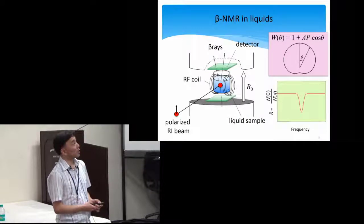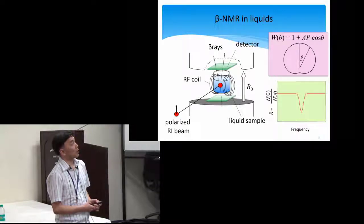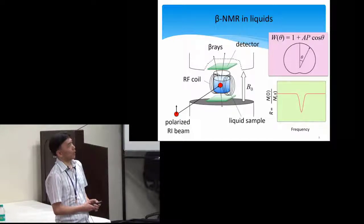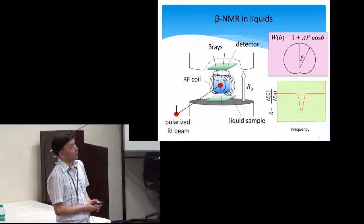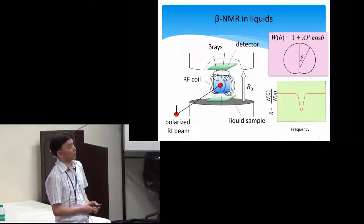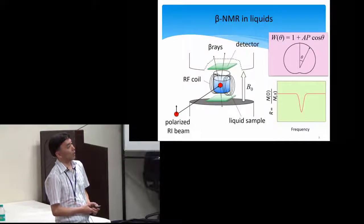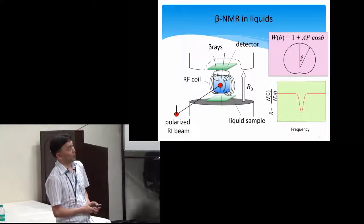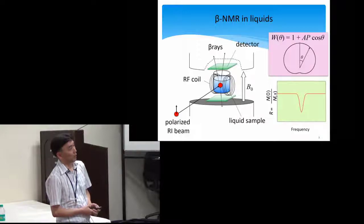The principle of beta-NMR is using the asymmetric beta-ray distribution relative to the direction of polarization. The counting rate of beta-rays up and down relative to the polarization, from the ratio of the counters, we can monitor the direction and the degree of polarization in the material. And applying the RF field and scanning the RF frequency at the resonance condition, the asymmetry changes due to the nuclear magnetic resonance so that we can detect the NMR spectrum.